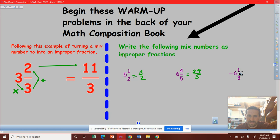And we have a negative 6 and 1 third. So same rules apply. We just know that our answer is going to be a negative amount. So 3 times 6 is 18. 18 plus 1 is 19 over 3.